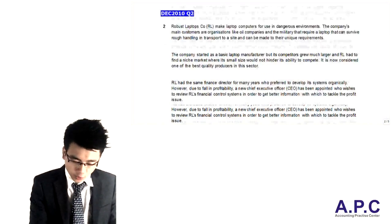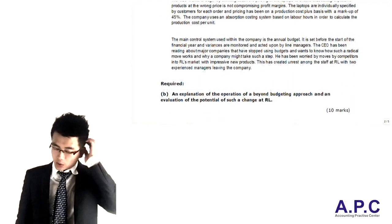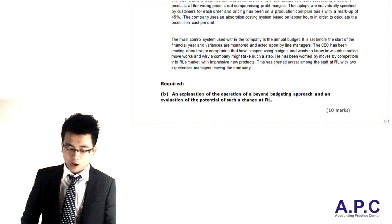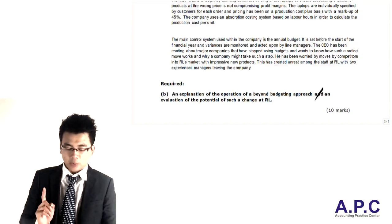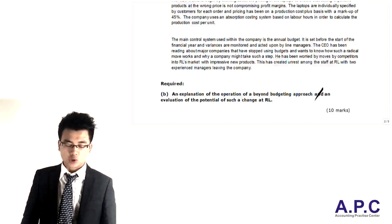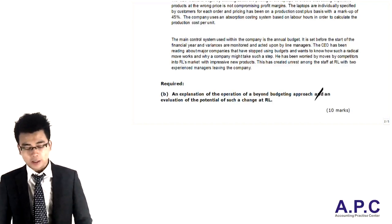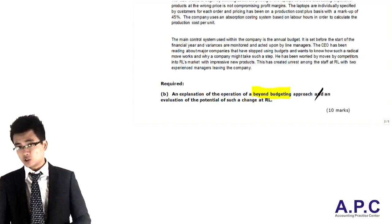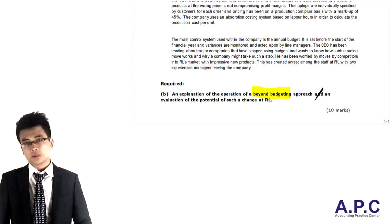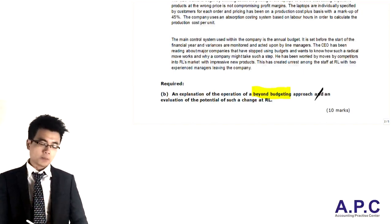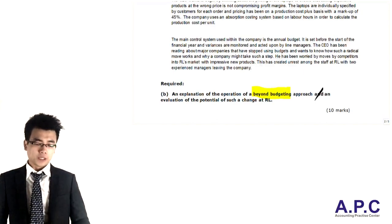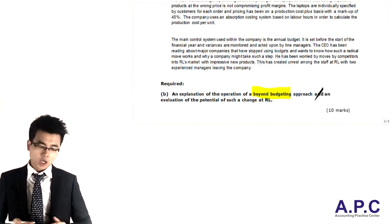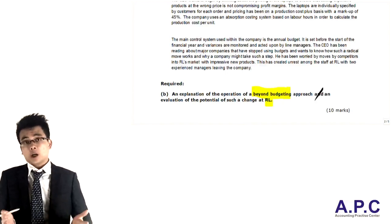Let's have a look at the requirement. We're going to focus on part B only within this question. Part B asks for an explanation of the operation of Beyond Budgeting and an evaluation of the potential of such a change at the company. We're going to explain what Beyond Budgeting actually is, compare it to traditional budgeting, why traditional budgeting is not suitable within the company, and the principles for implementing the Beyond Budgeting approach. Then we're going to apply this to the scenario to see whether or not the company is appropriate to use Beyond Budgeting.